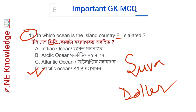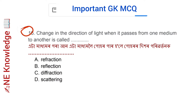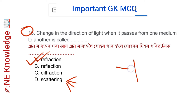Question number 16: Change in the direction of light when it passes from one medium to another is called? Options include reflection, scattering, and refraction. When light passes from one medium to another and changes direction, that is refraction. Correct answer: Option A — Refraction.